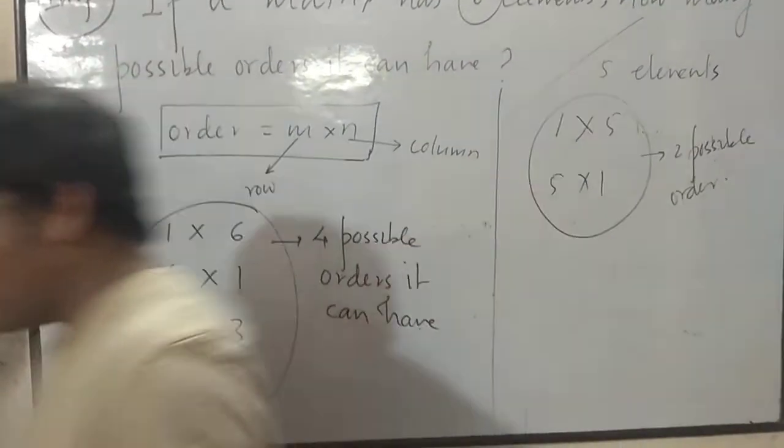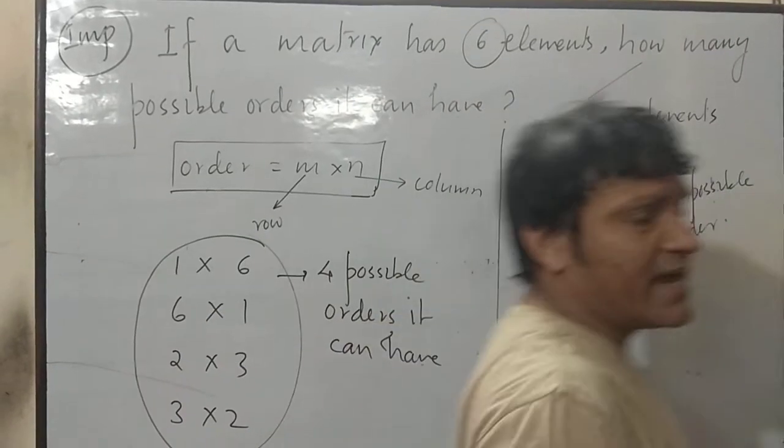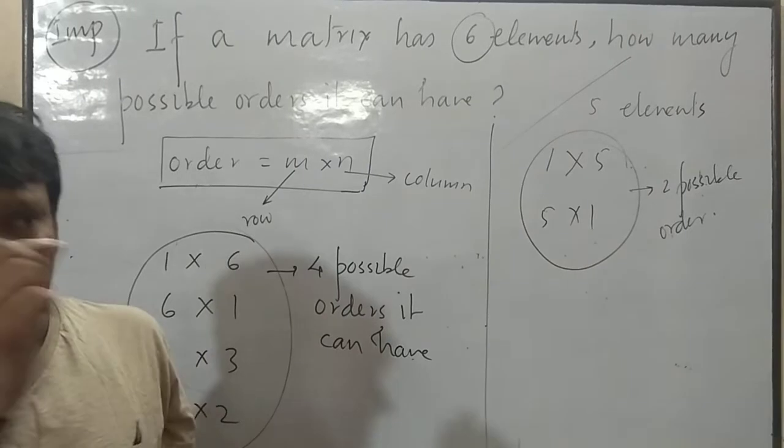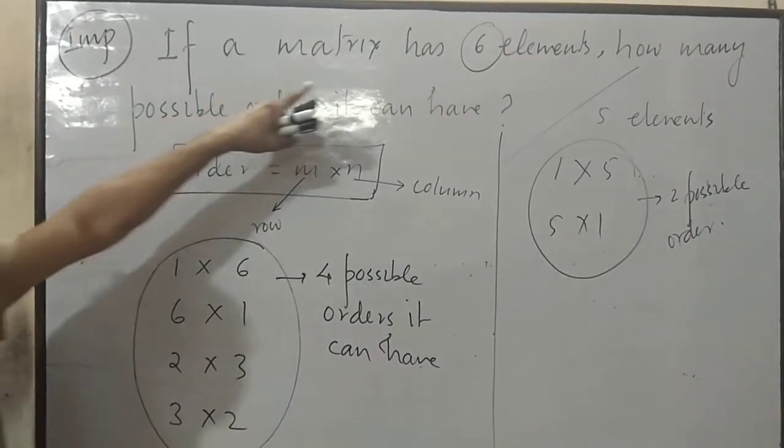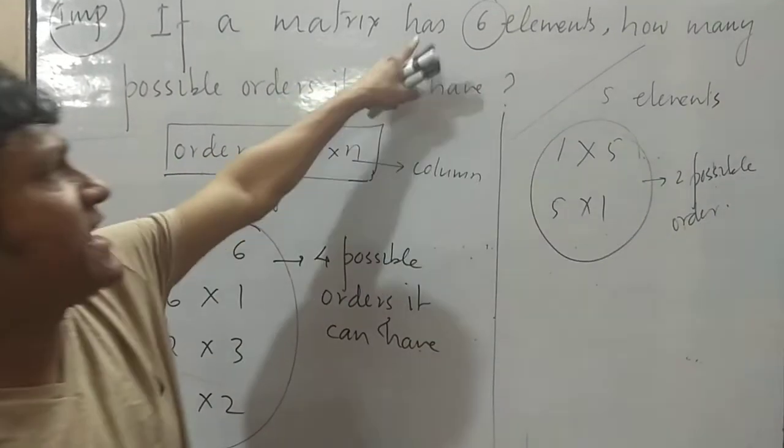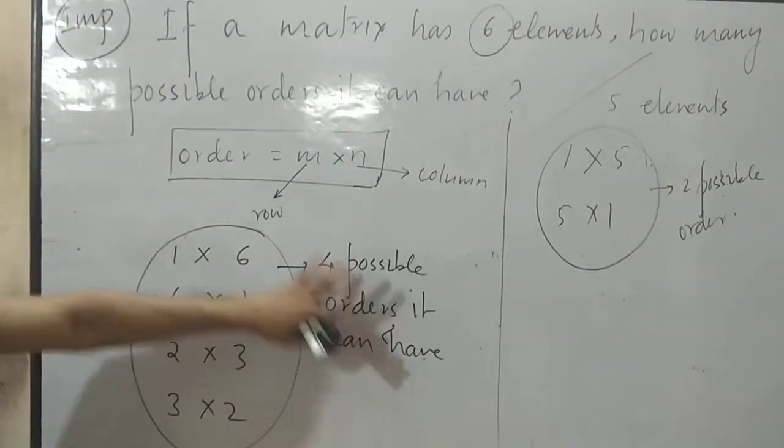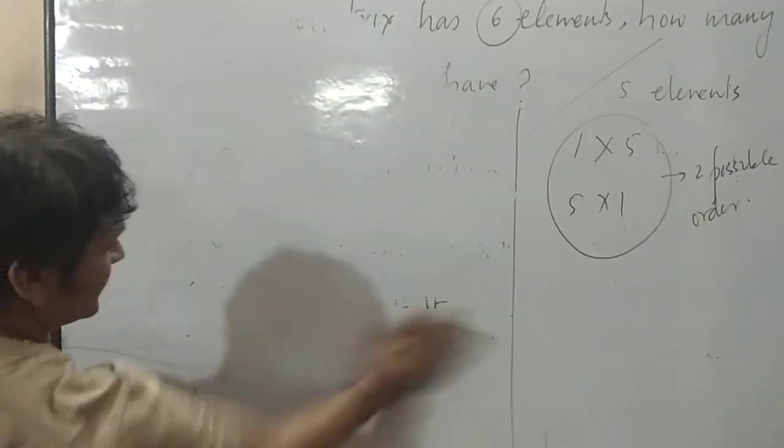Now, next topic. So, these two things are very important. General matrix. I told you general matrix. A11, A12, A21, A22. Same way here. Next type of question they can ask. How many orders it can have when 6 elements are there or 5 elements are there. It is visible here. You can check it out. If any confusion, I will be rectifying in next video.